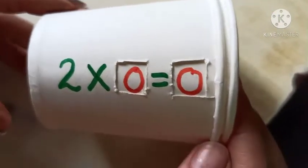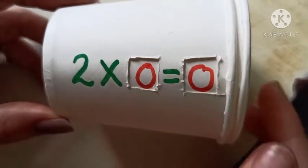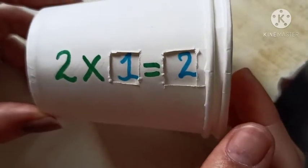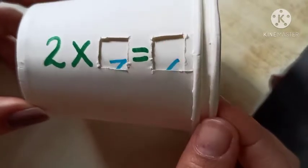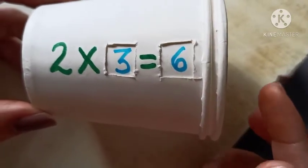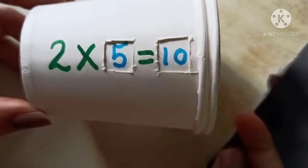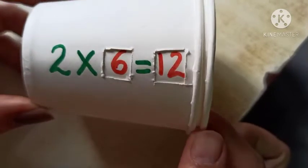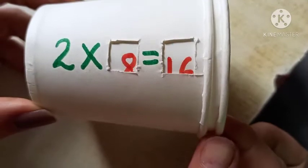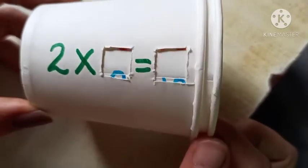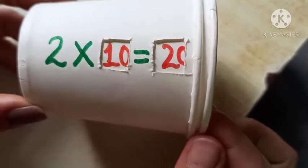With the help of this, we will be able to understand the table of 2. 2×0=0, 2×1=2, 2×2=4, 2×3=6, 2×4=8, 2×5=10, 2×6=12, 2×7=14, 2×8=16, 2×9=18, 2×10=20.